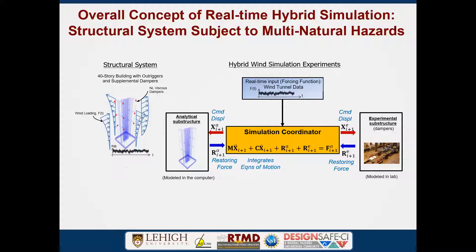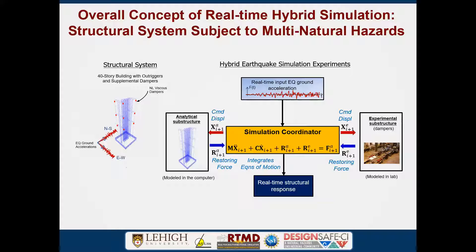That information is used to march forward in time. Having completed the simulation through the time span of interest, you have the real-time structural response. If you want to slow it down you can, but restoring forces from the experimental substructure may not be correct if there's rate dependency — that's the motivation behind real-time hybrid simulation. For earthquake loading, you can replace the forcing function with ground motions, including bidirectional or vertical components.